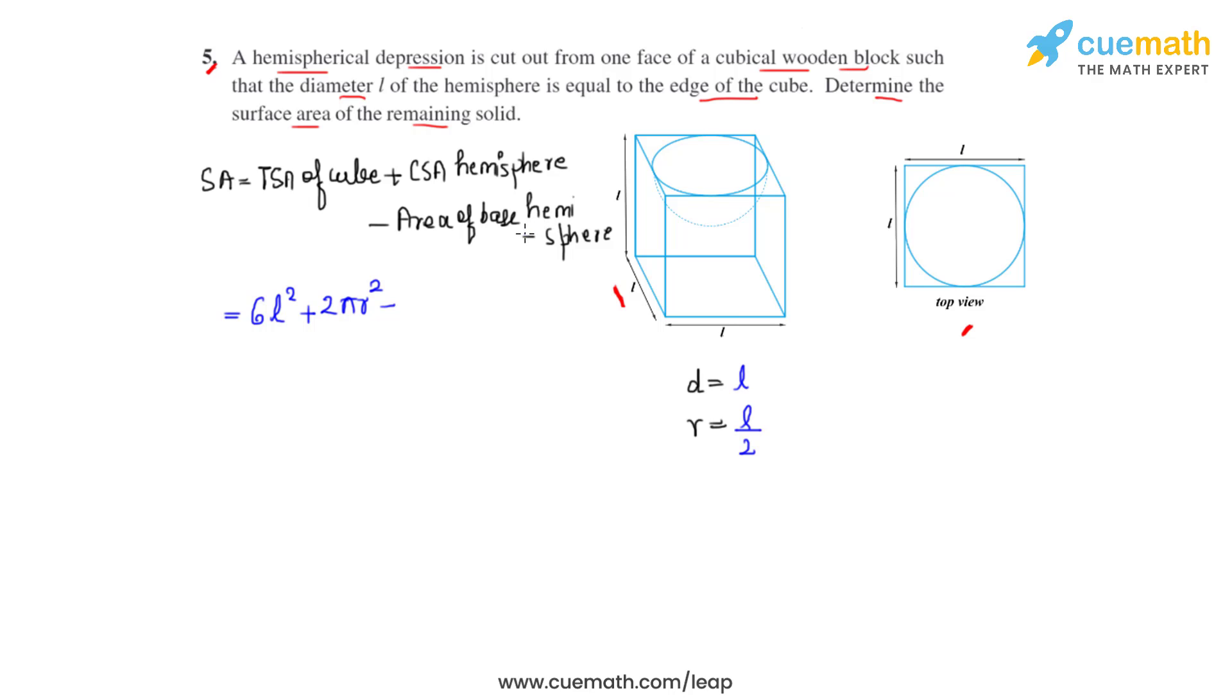Now the base of the hemisphere is a circle of radius r, so we can write it as πr². So on further calculation we get that as 6L² plus πr².